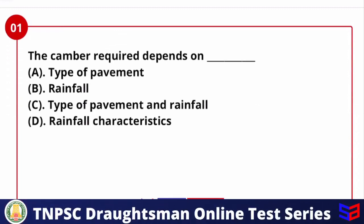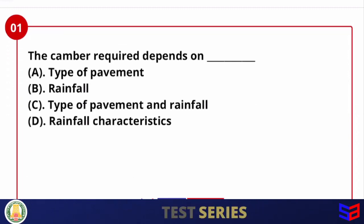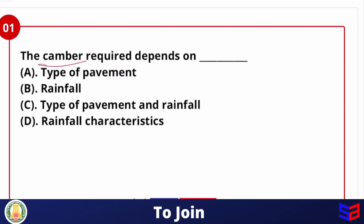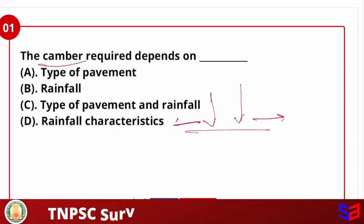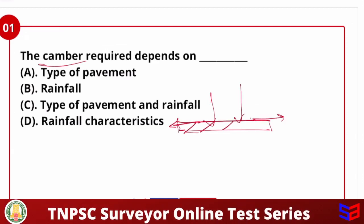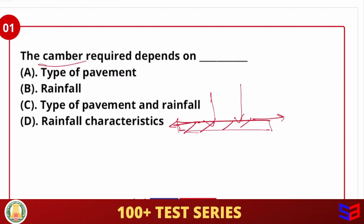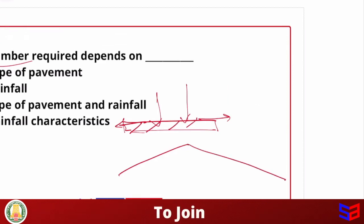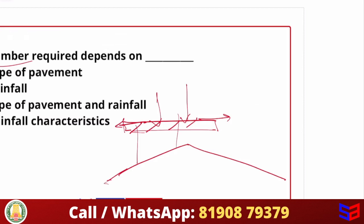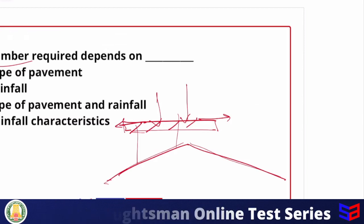The camber of a road depends on what? When we look at the road, rainfall makes the road wet, and water becomes stagnant. Stagnation of water causes damage to the pavement. To avoid this, we create a transverse slope along the pavement to drain water off the road. That transverse slope is called camber.